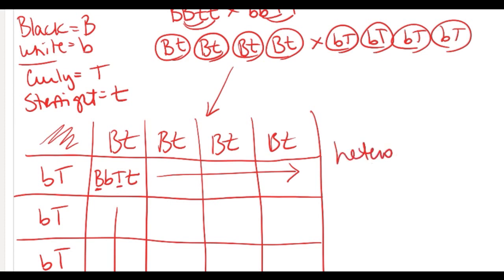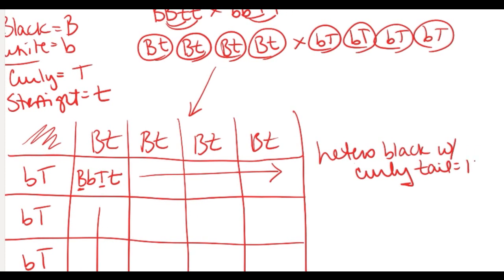So in this case, let me go back to my symbols. I look at the first letter of each trait. So big B is black, so I'm going to do heterozygous black with heterozygous - I can use the same term for both - curly tail. And there are going to be 16.